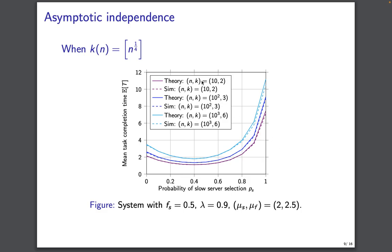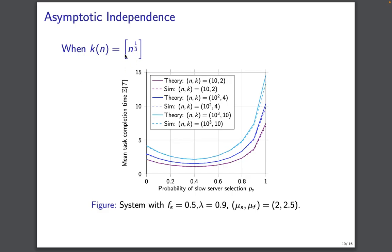You can see that the theoretical results, which are plotted as the solid line, and the simulation results, which are the dashed lines, they are very close to each other. This asymptotic independence holds not only when k is in the order of n raised to 1/4, but we saw that it also holds for other scaled values of n.